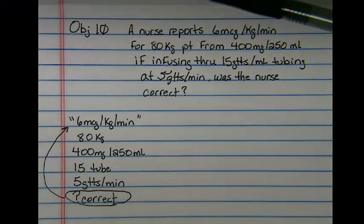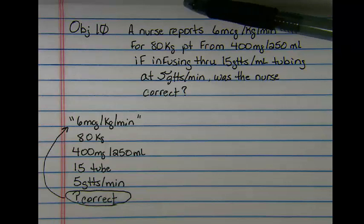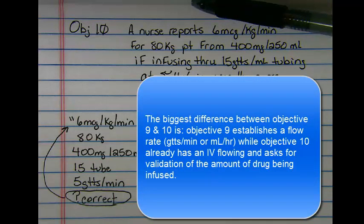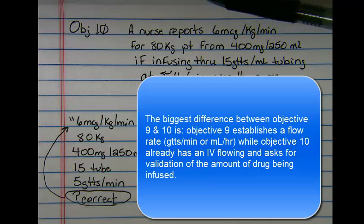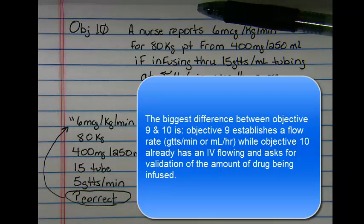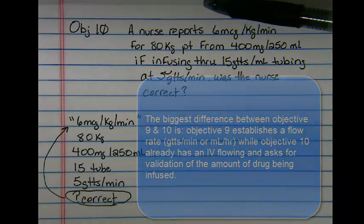In Objective 10 problems, you'll notice that what you do get is an IV that is infusing, whether it be by drop per minute or milliliter per hour. Your questions will include an IV that's flowing and ask you, in essence, to work backwards from where you were calculating a flow rate.